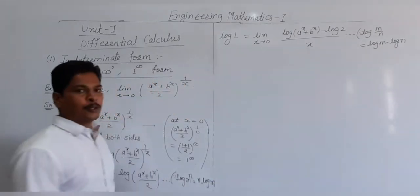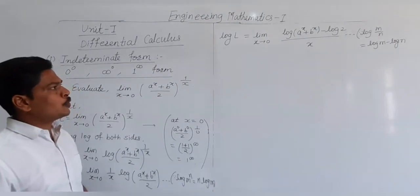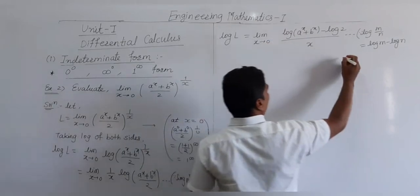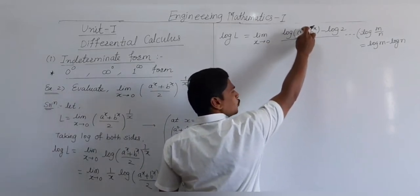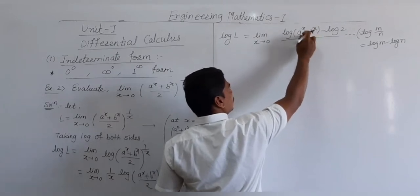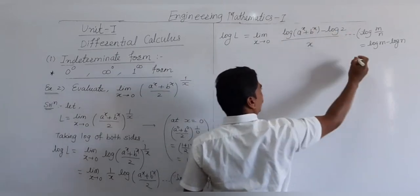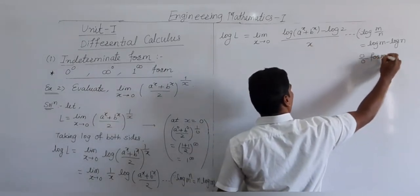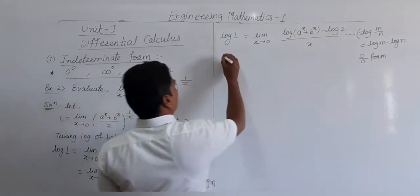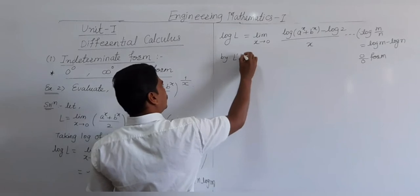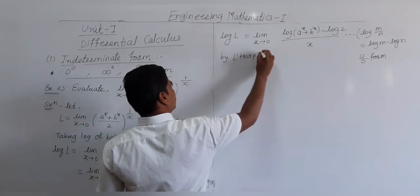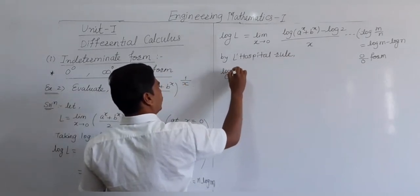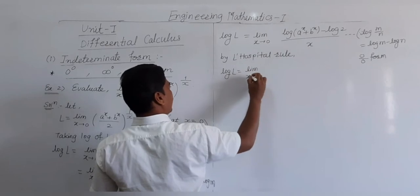Now checking the form: putting x equal to 0, the numerator becomes log(A raised to 0 plus B raised to 0) minus log 2, which is log 2 minus log 2 equals 0. The denominator x is also 0. So this is a 0 by 0 form. By L'Hôpital's rule, log L equals limit x tends to 0.